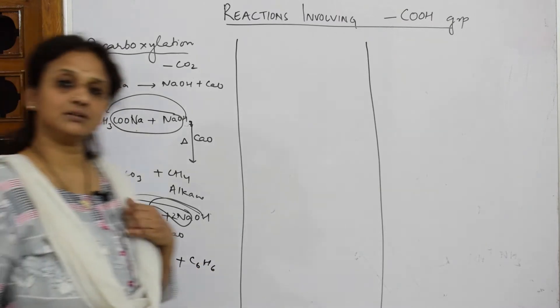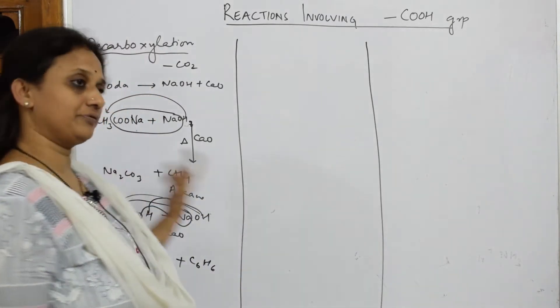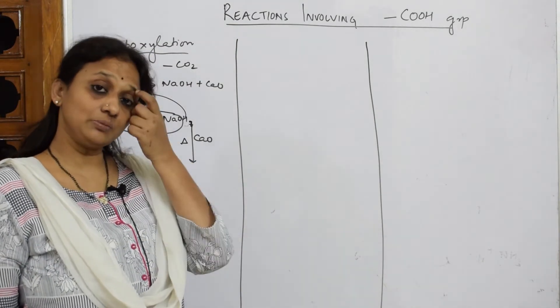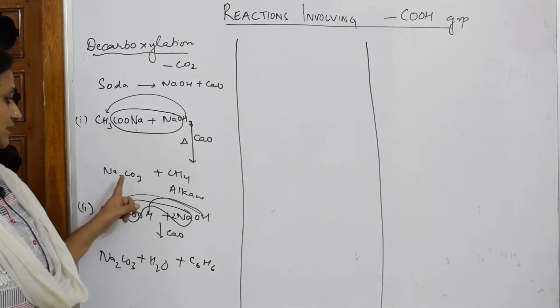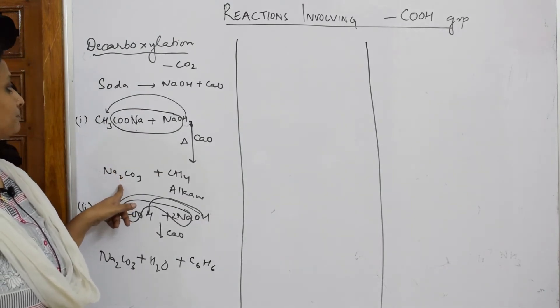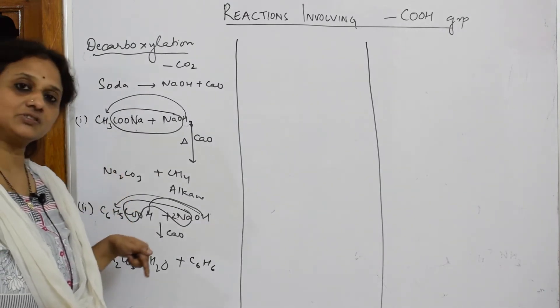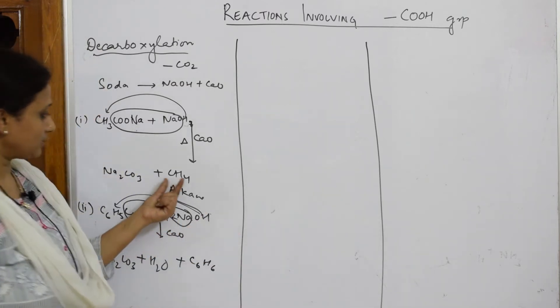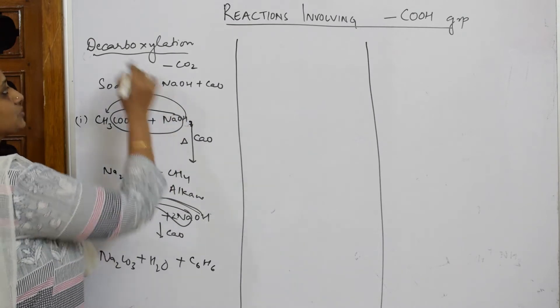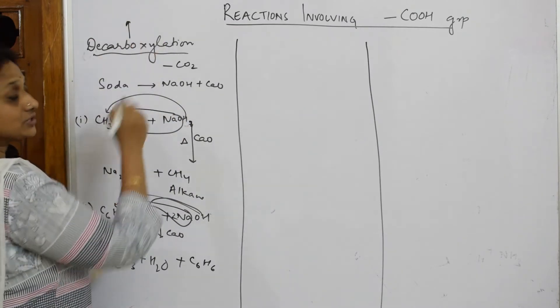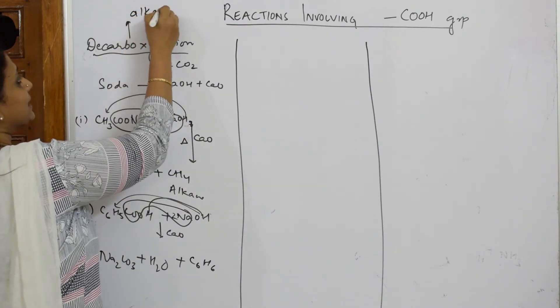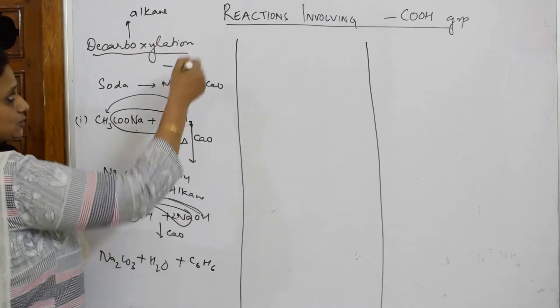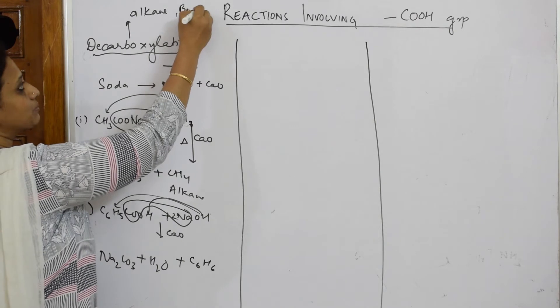Whenever you are treating sodium salt or calcium salts, you are treating with soda lime, you will be getting decarboxylation reaction that is sodium carbonate. This sodium carbonate further dissociates into sodium oxide and carbon dioxide. You are preparing alkane whenever using soda lime. Decarboxylation reactions are going to prepare alkanes. In this case, we have got aromatic benzene also, we have prepared benzene.